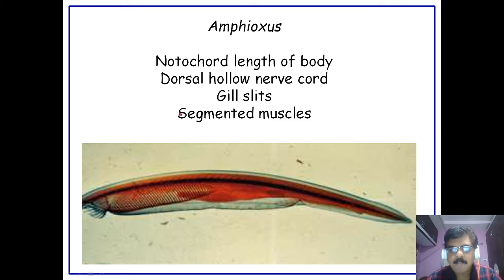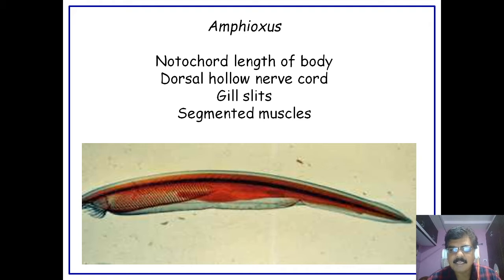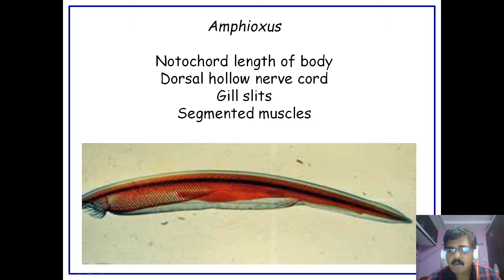Along with this, the dorsal hollow nerve cord is present, running from the head region to the tail region. The third chordate characteristic that Amphioxus has includes the gill slits in the pharyngeal region and segmented muscles.